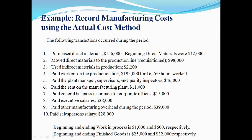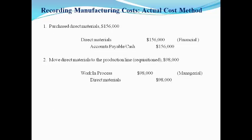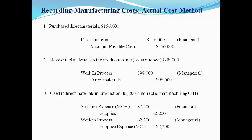Take a moment and read through the information and the transactions before we walk through this example. The first transaction — materials purchased — is recorded by the financial accountant just as any other asset purchased. The second transaction is the adjustment made by the managerial accountant to record the direct materials moved to the production line. The third transaction records the use of supplies. Supplies are indirect materials and are part of manufacturing overhead. The financial accountant records the use of supplies and the managerial accountant moves this cost to inventory.